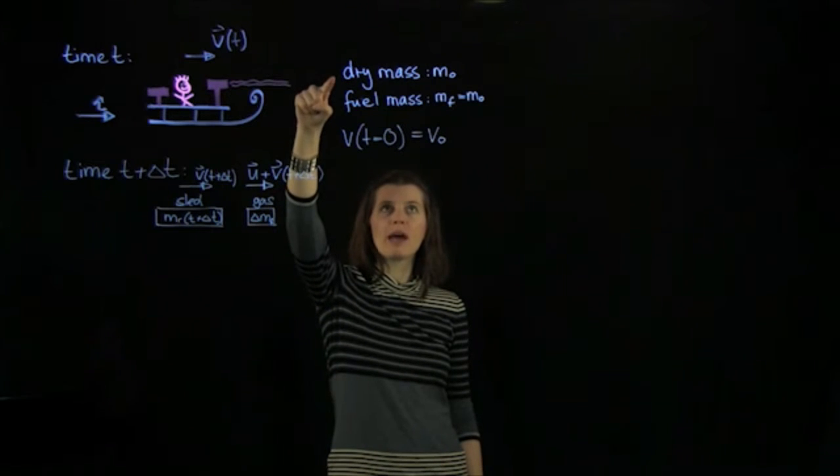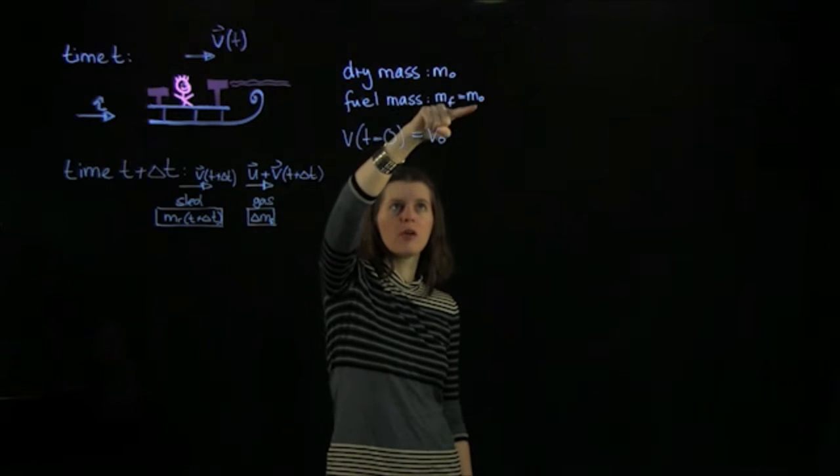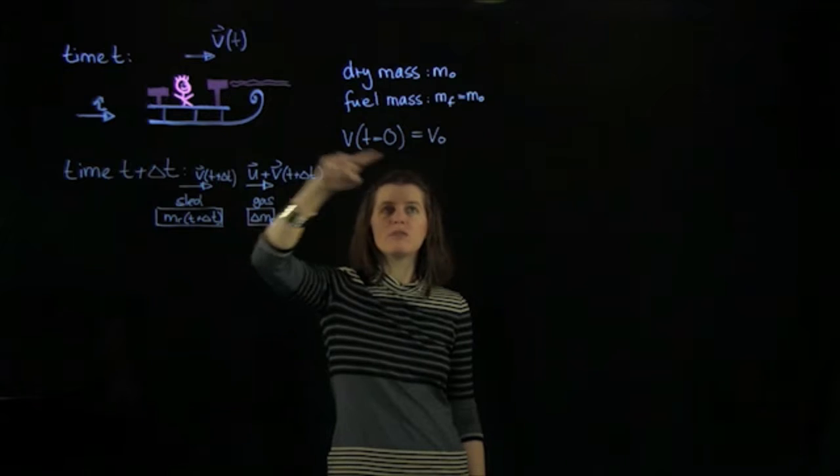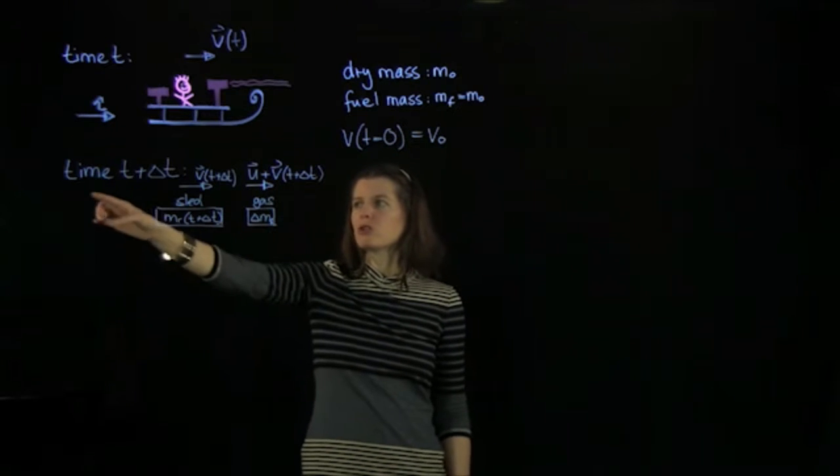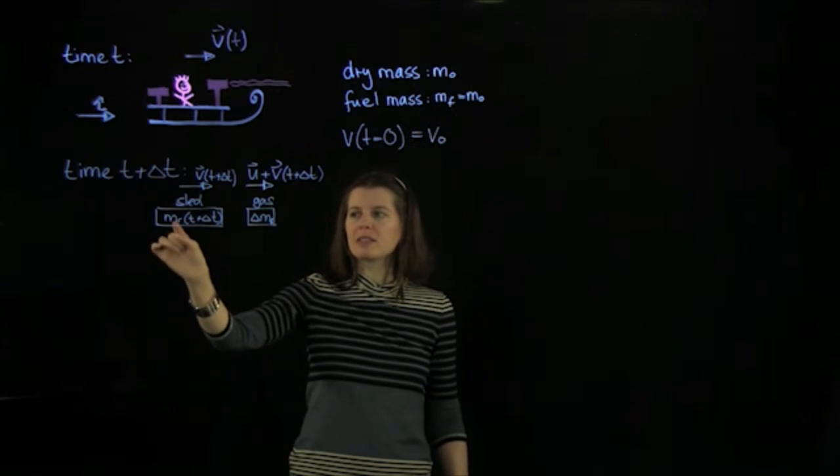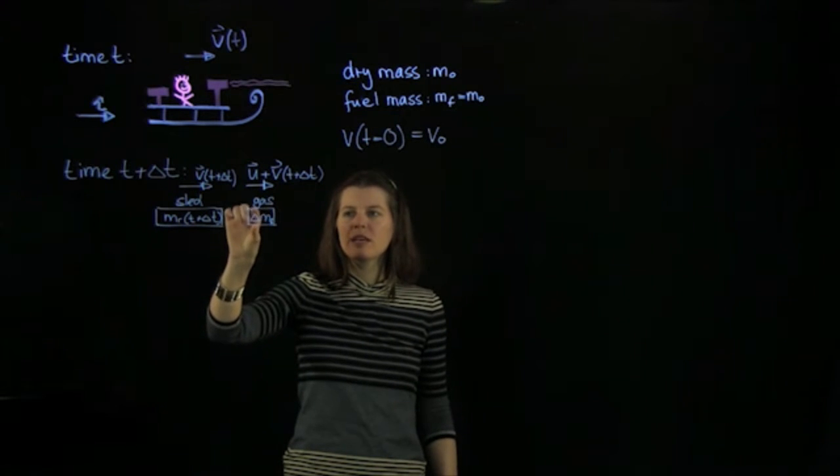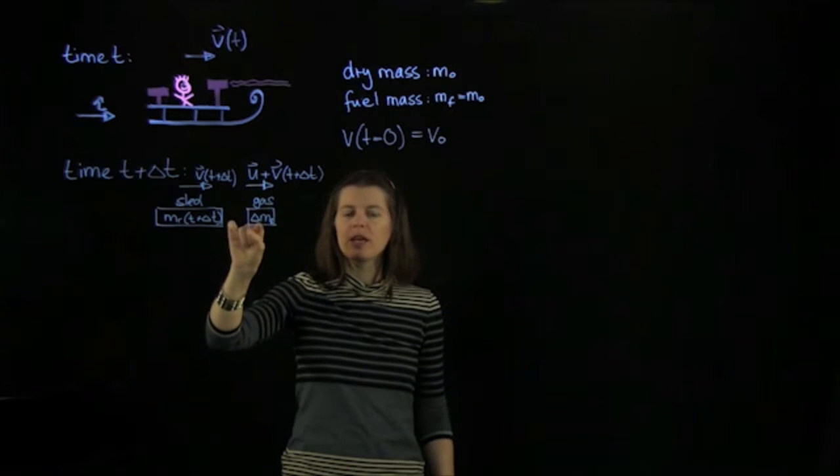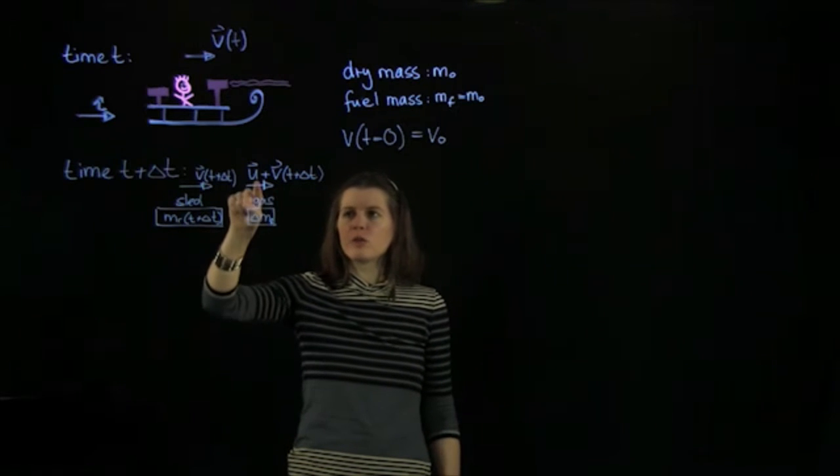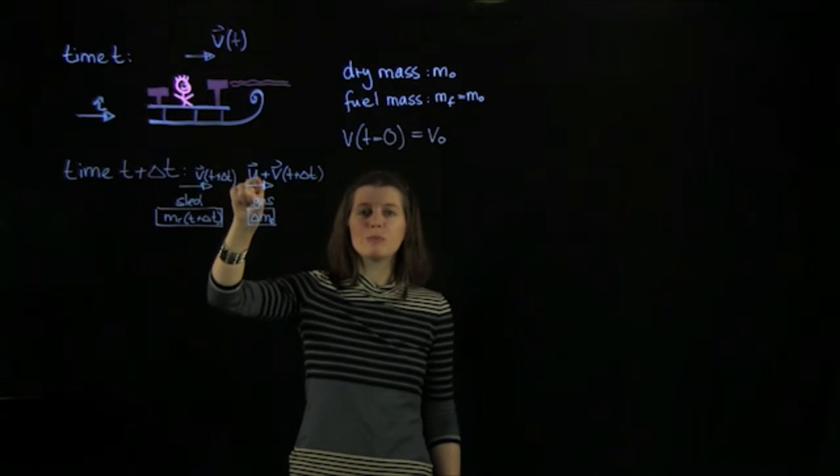We know that the dry mass has a mass of m0. The fuel mass is given also as m0. And we know that at time t equals 0, the speed of the sled is v0. We also know that at a later time, t plus delta t, we have the sled here whose mass is now m of t plus delta t. And we have this little mass parcel that has been ejected, so the gas. And that has the mass of delta mf, so the mass of the fuel. And we furthermore know that relative to the sled, this little gas parcel is moving with a speed u.